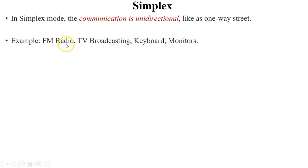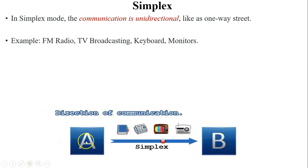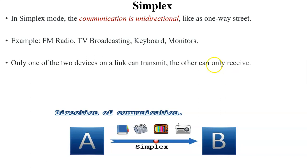The receiver cannot send data and the sender cannot receive data. Other examples of simplex mode are FM radio, TV broadcasting, keyboards, and monitors. In FM radio, we are all listeners — the receiver — and the broadcaster is the sender. We cannot send a signal to the radio broadcaster. In the figure, A is the sender and B is the receiver; A can send data and B can only receive data.